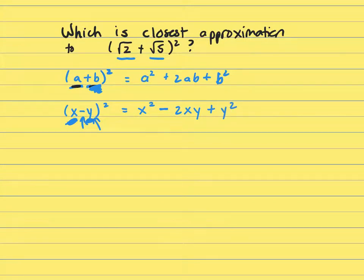All right, so let's practice that with our problem. Our problem is square root 2 plus square root 5 squared. Now there's a key word here, approximation. Whenever you see that, or you may see the word closest, what that means is you can approximate a number that makes the problem easier.